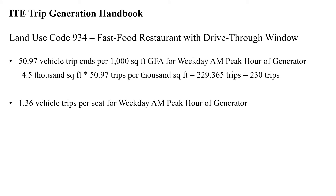We're going to take our input — 4,500 square feet — multiplied by our average rate of 50.97 trips per thousand square feet, which gives us approximately 230 trips. Again, this is during the morning peak hour on a weekday for this McDonald's.